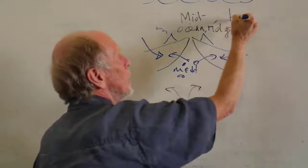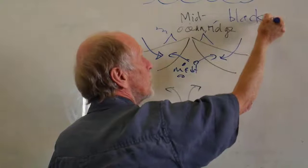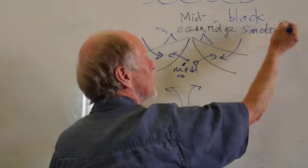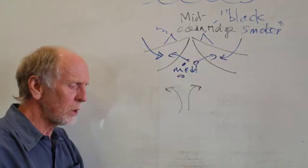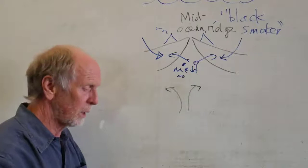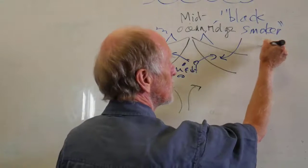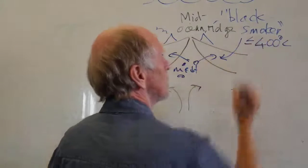These deposits form in what are known as smoker systems. A particularly important one from the point of view of metals are the black smokers. These are chimneys which are venting hot fluid back into the ocean at temperatures of the order of up to 400 degrees Celsius, so less than or equal to that.